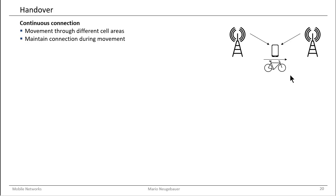If you move with your bike and your phone through the network through different cells, the network provider somehow has to manage this movement. It has to support the so-called handover. Handover can happen if you have set up a call and then talk while moving through different cells. You don't want to terminate the call when you leave one cell and set up a new call when you enter a new cell — you want to be transparently handed over to the next cell, which requires a handover mechanism implemented in the mobile network.